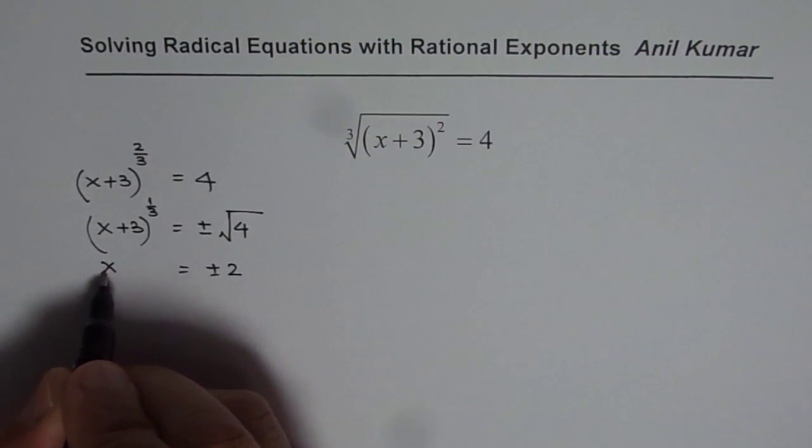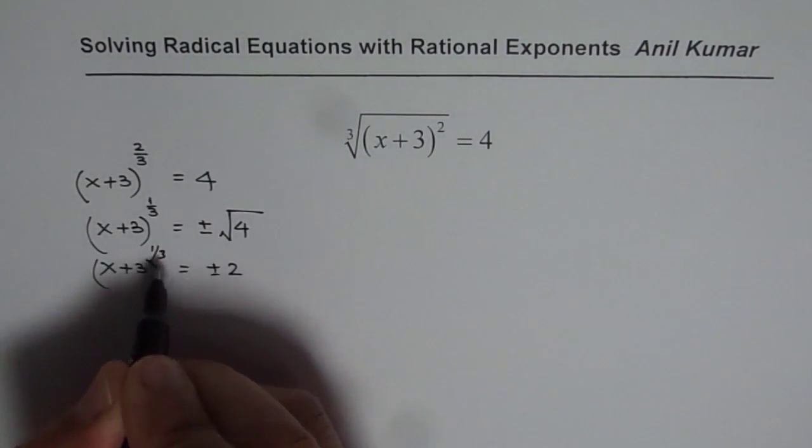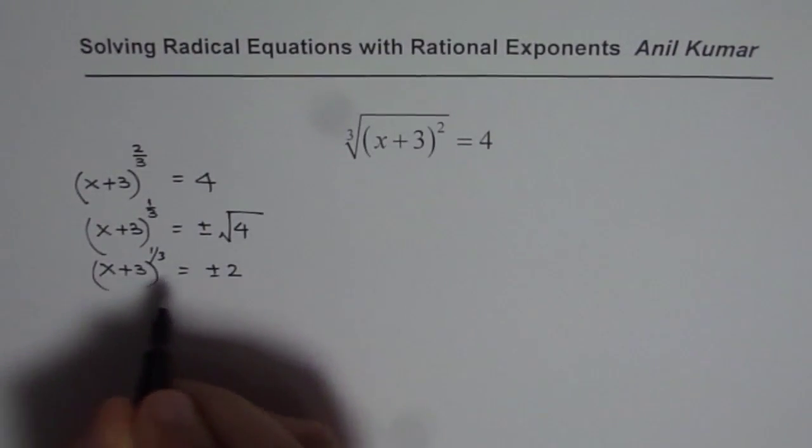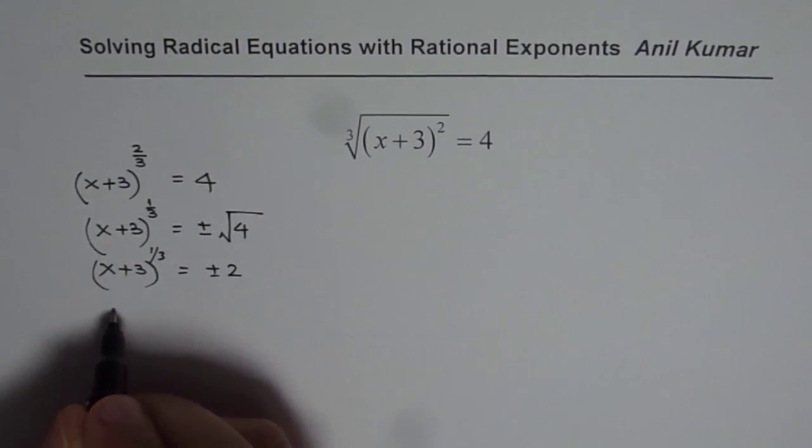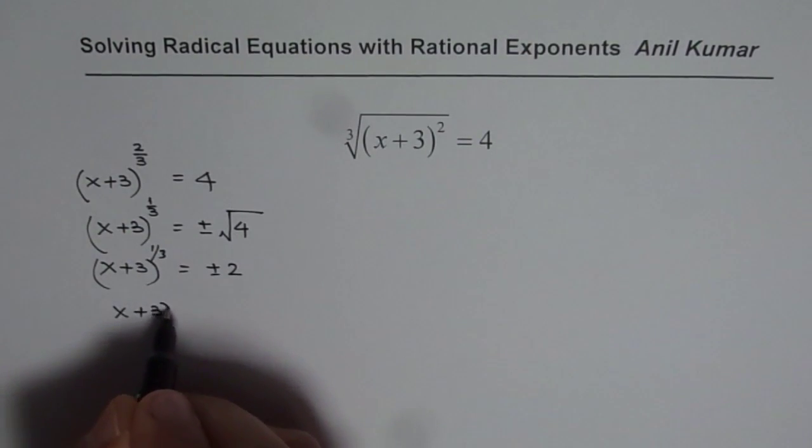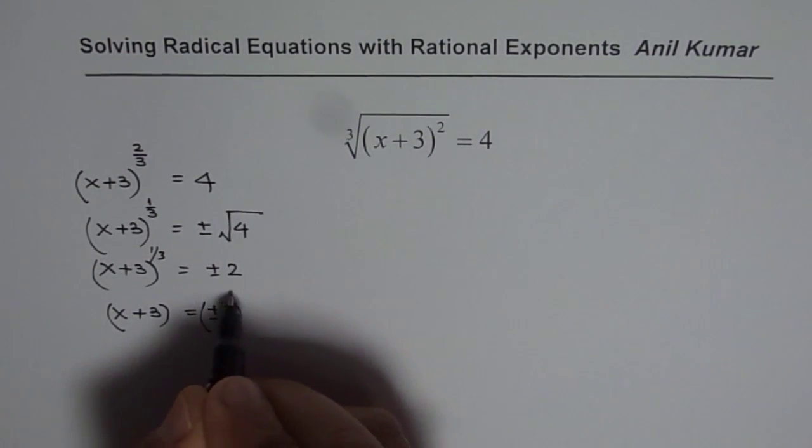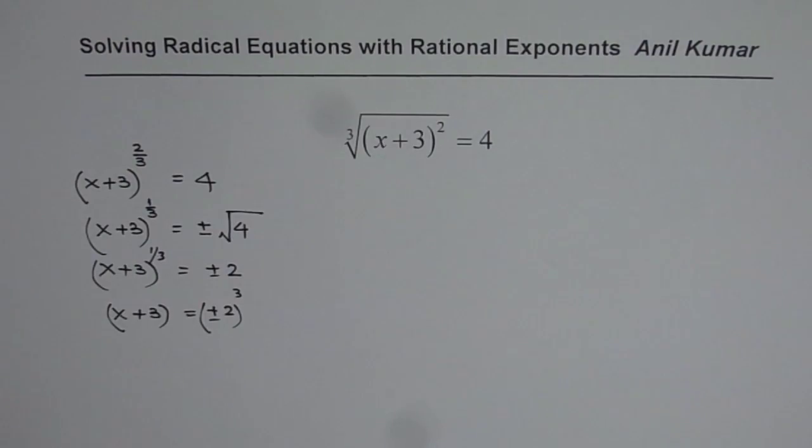So x plus 3 to the power of 1 over 3 equals to plus minus 2. Now we can cube both sides. When you do that, you get x plus 3 equals to plus minus 2 cube.